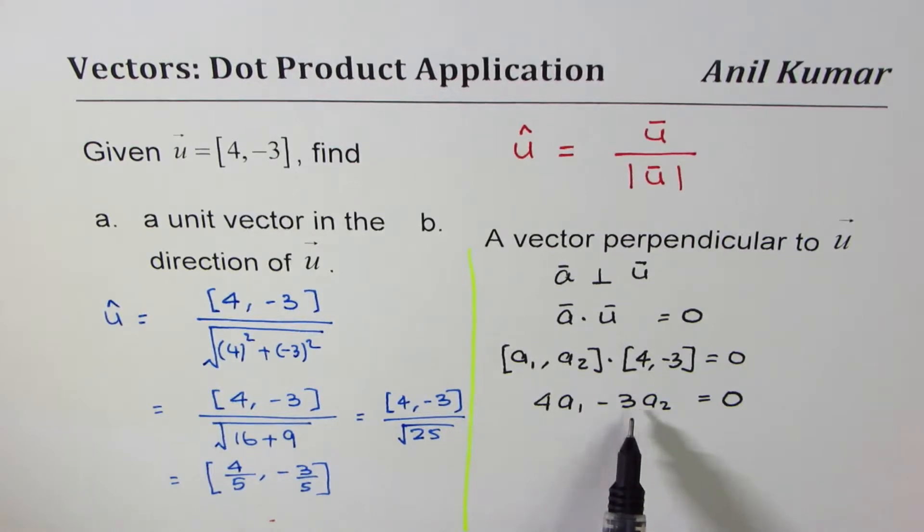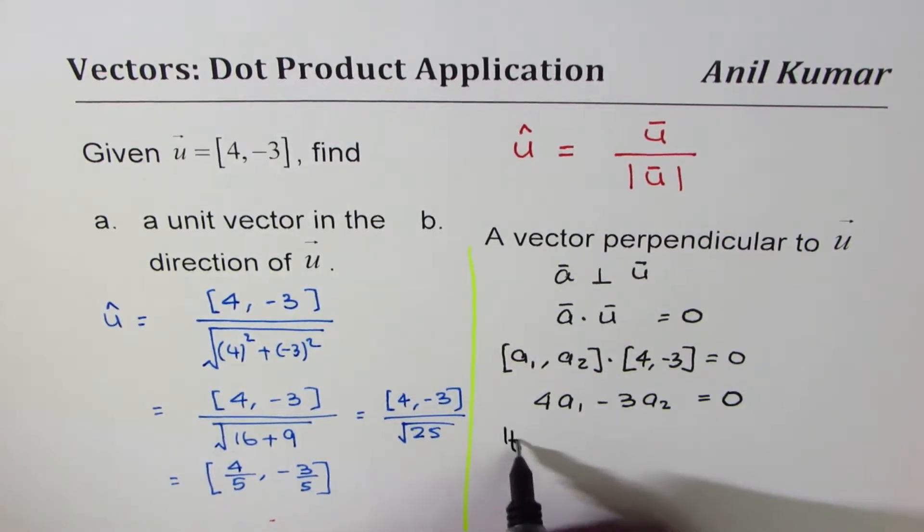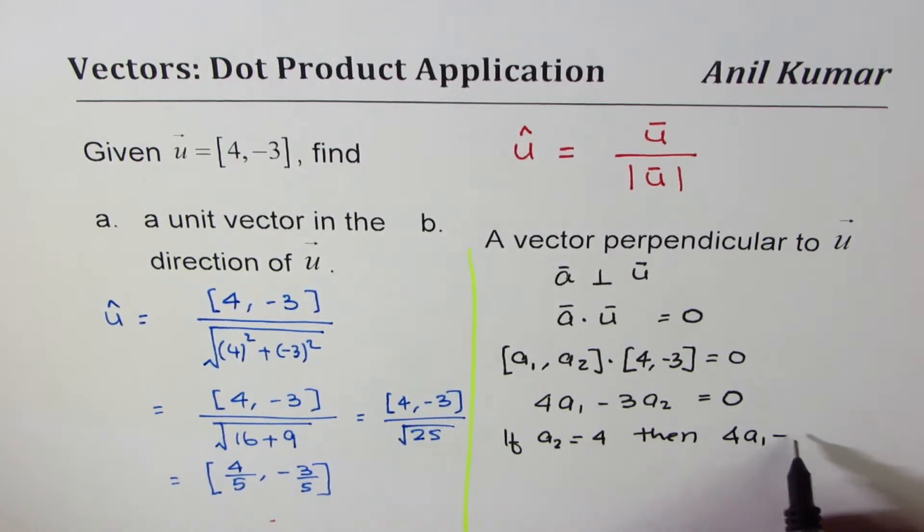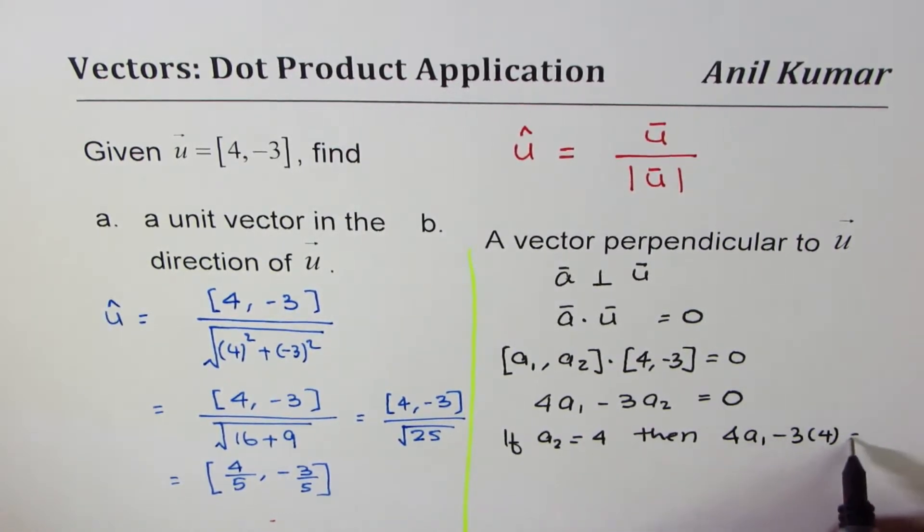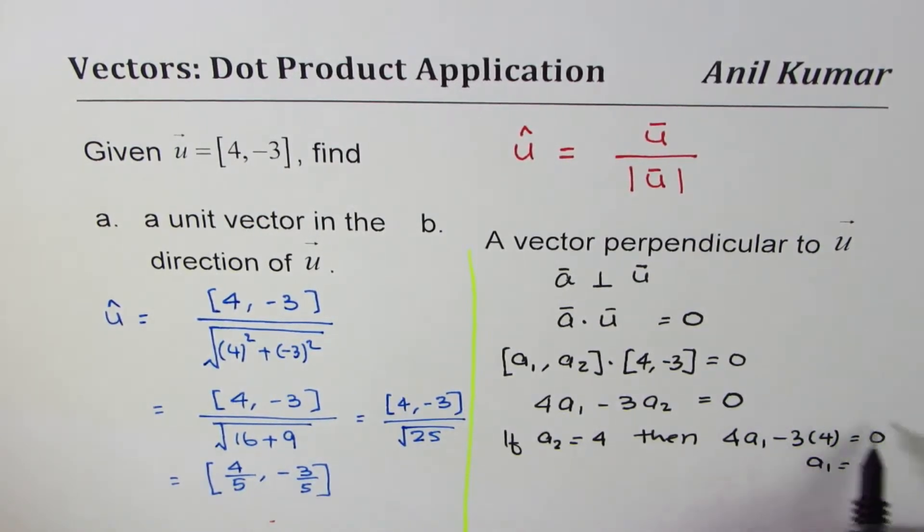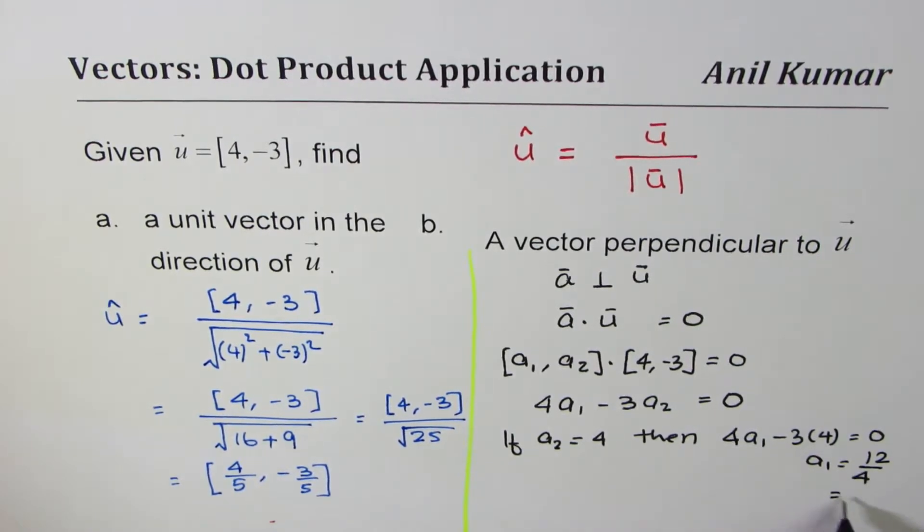So if a₂ equals 4, then 4a₁ - 3(4) = 0, or a₁ equals 3 times 4 divided by 4, which is 3.